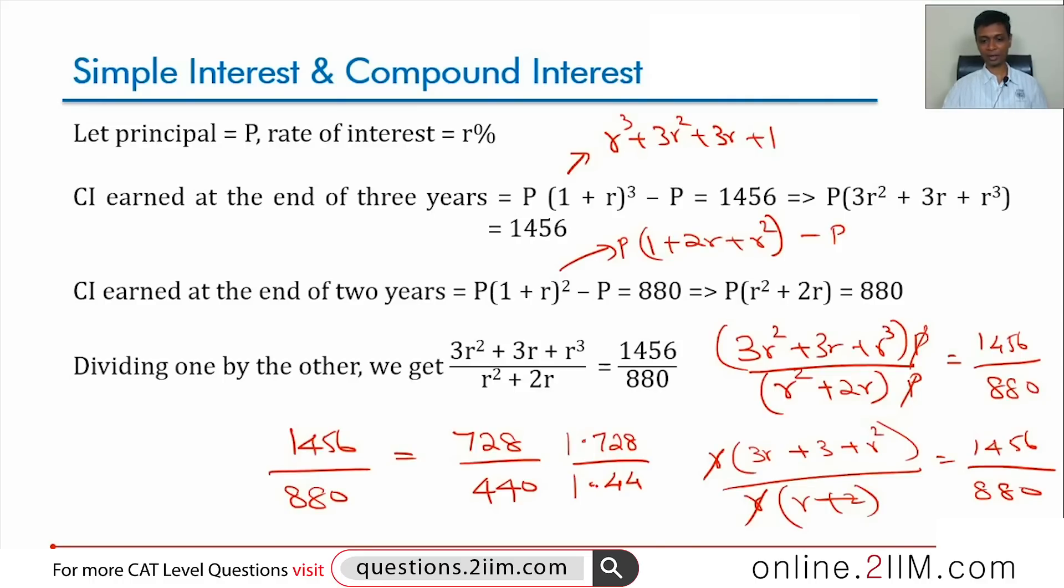This can be thought of as, this ratio is nothing but 1.2 cube minus 1 by 1.2 square minus 1. If you can sense that, then straight away rate of interest is 20 percent, everything else you can simplify after that. If you can sense that, then you know rate of interest is 20 percent, 0.2 and then you are just writing down the answer.